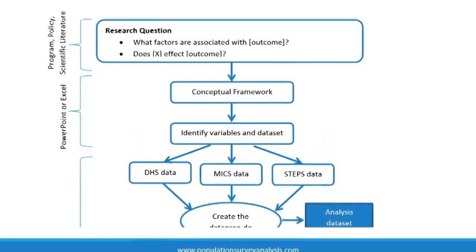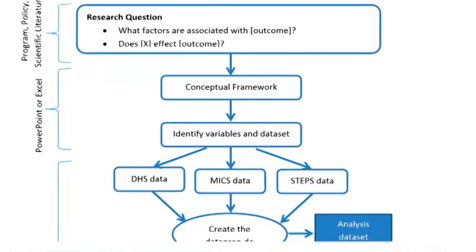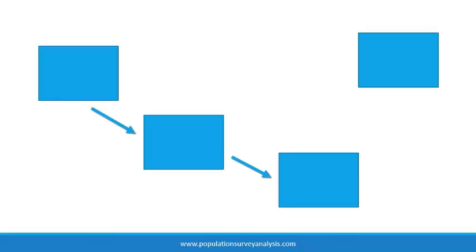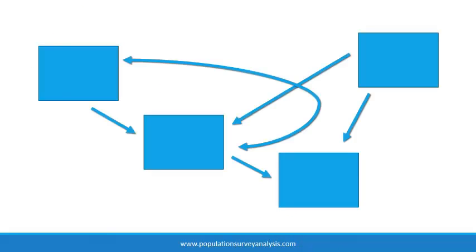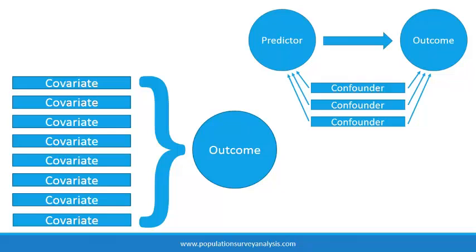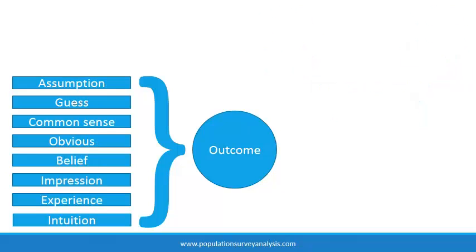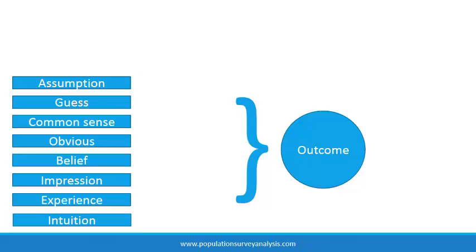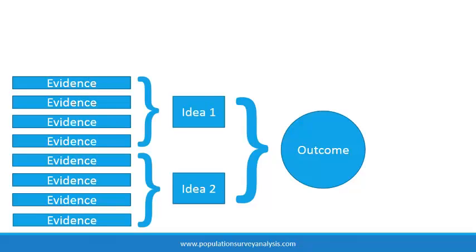Once the questions and associated research objectives are clearly stated, a conceptual framework can be stated in words, but I encourage you to draw a picture of the factors or variables involved with the research question, with arrows showing how they are related. The conceptual framework can be as simple as the diagrams we just saw. Deciding which variables to include requires background research — I usually start by documenting my own assumptions, then update the conceptual framework based on a systematic literature review.